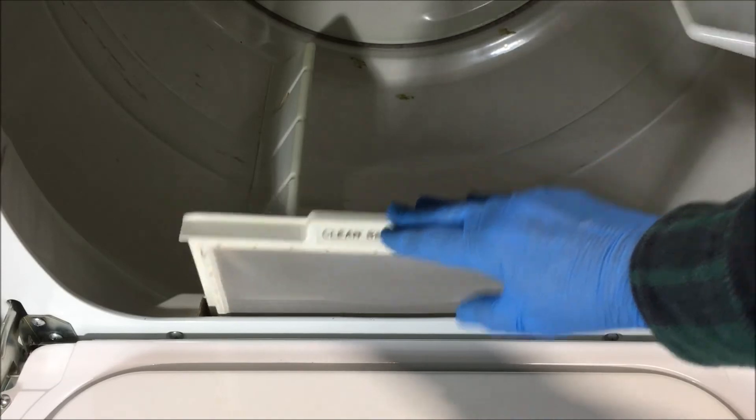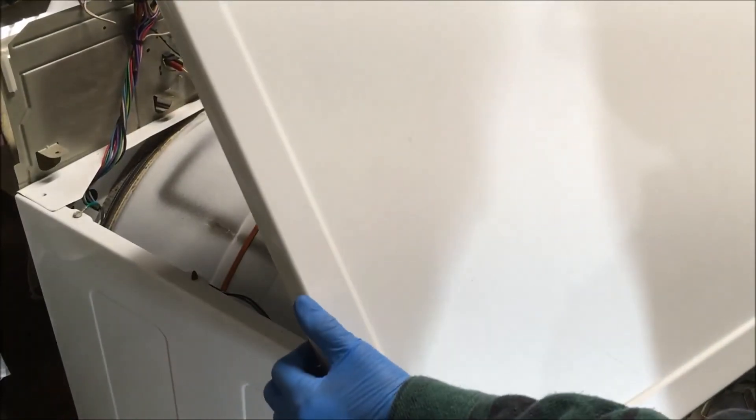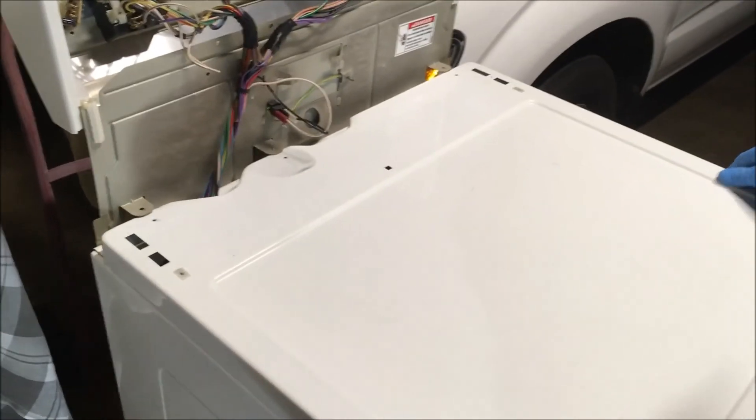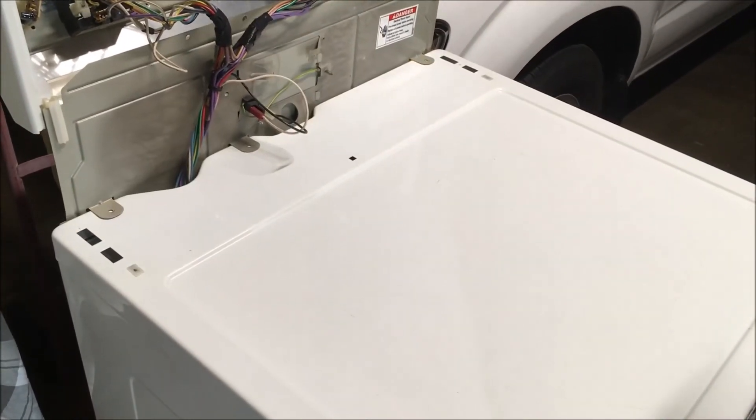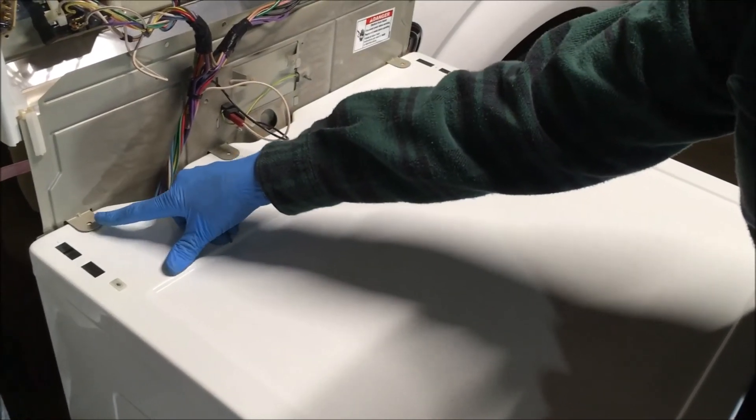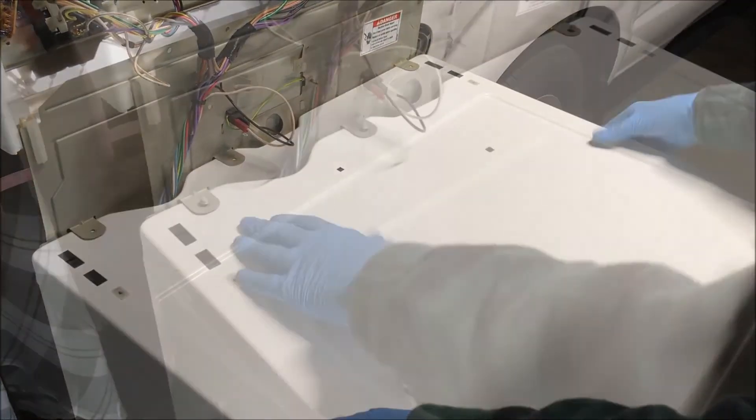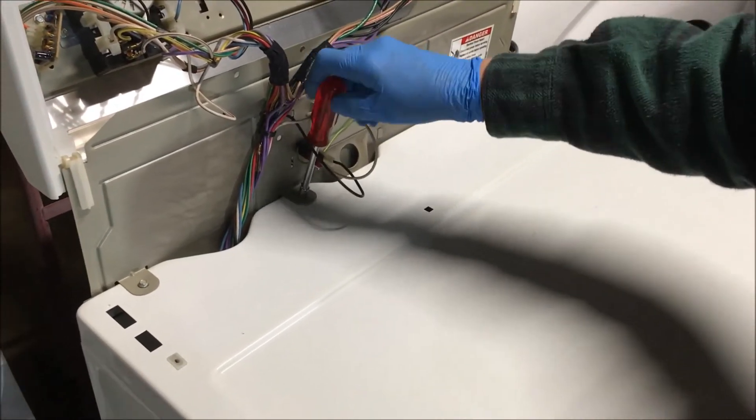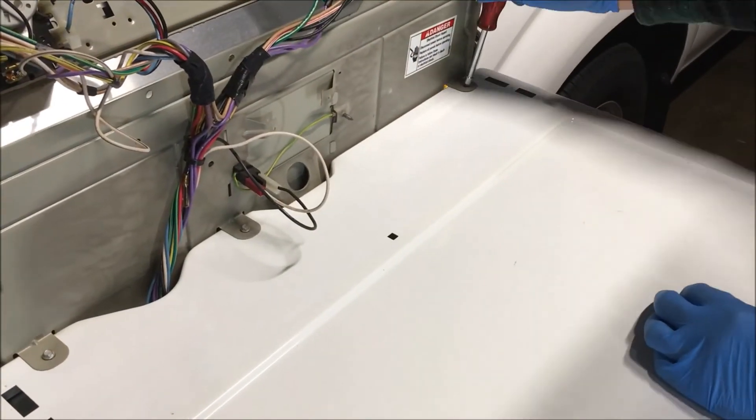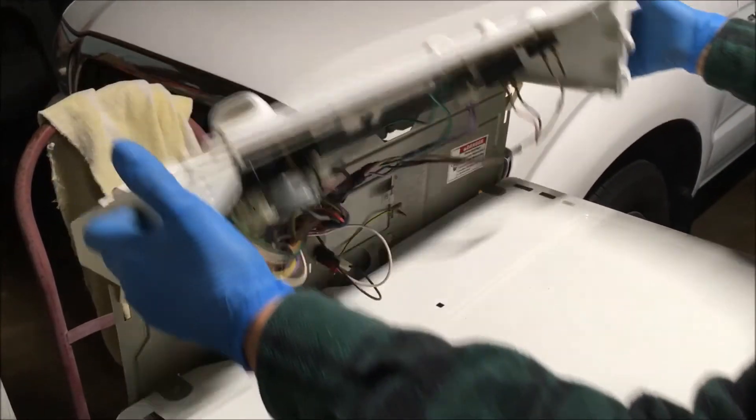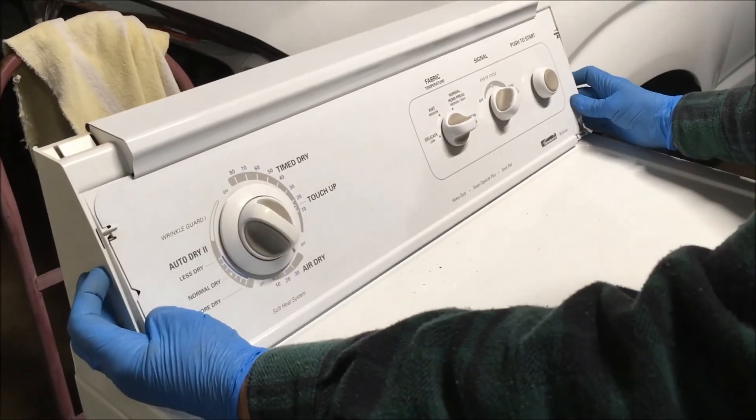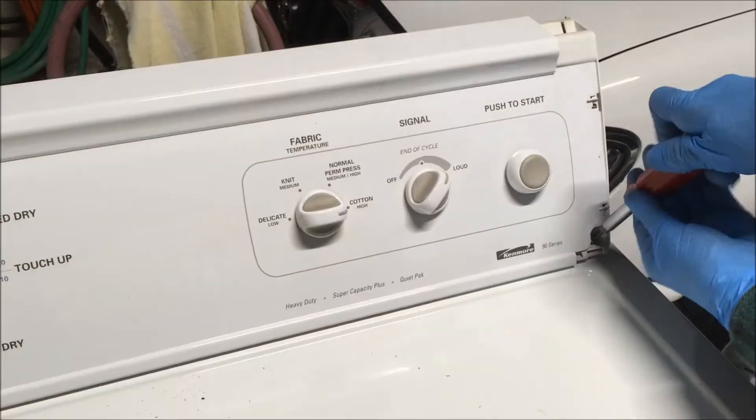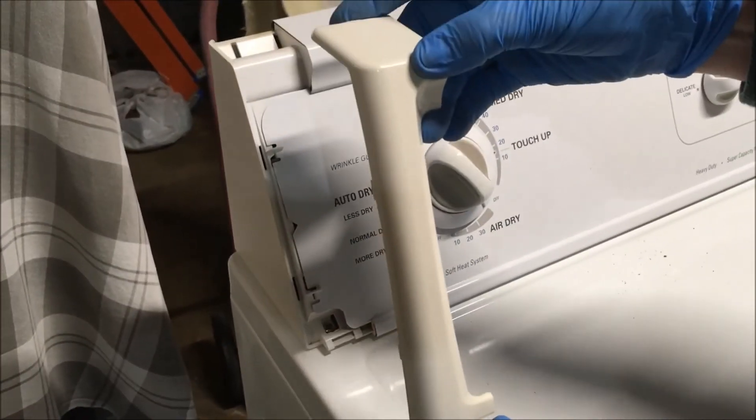Put the lint screen back in. Now I'm going to put the top panel back on. You just set it on top and slide it back. You want to make sure that the panel is under these tabs. Now you replace the three top screws. Rotate the control panel down. Replace the screw on each side. Replace the trim pieces.